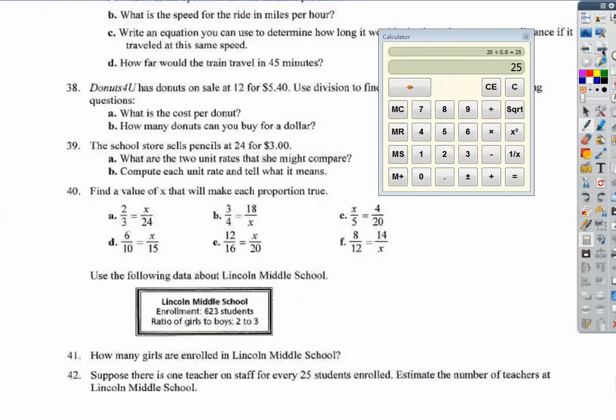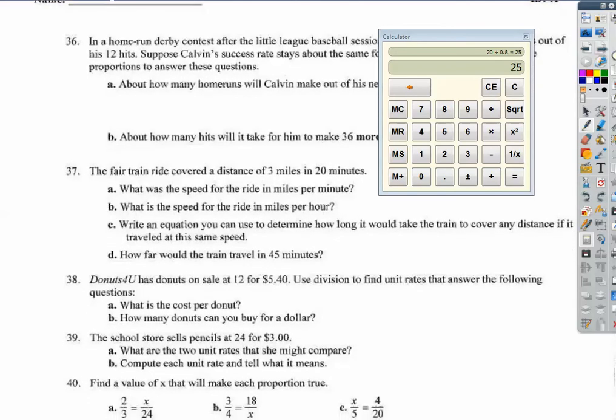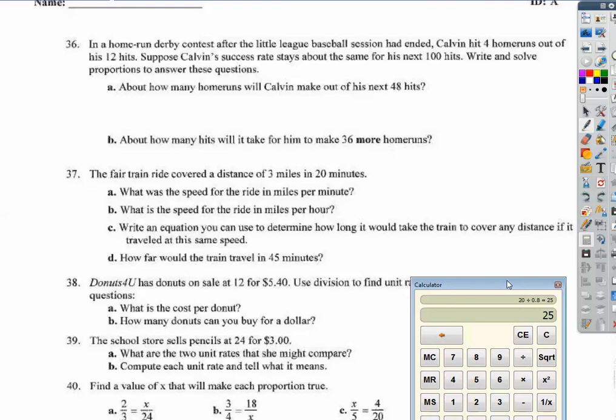The home run derby contest after the Little League World Series. Calvin hit four home runs out of his - oh, this looks like a proportion problem. Four out of 12. His success rate stays about the same for the next 100 hits. Write and solve a proportion. Question: How many home runs will Calvin have out of his next 48 hits? So we have hits, home runs. So what do I multiply 12 by to get 48? Well, four. So that would be 16.